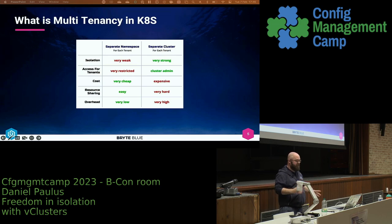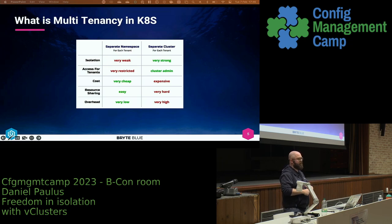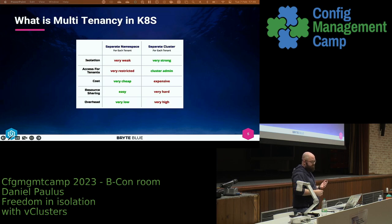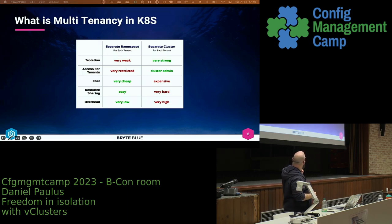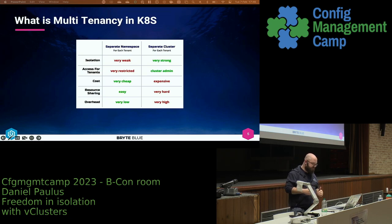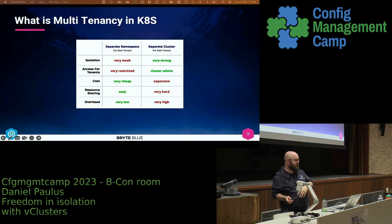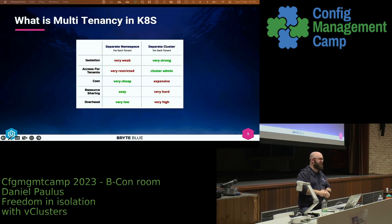If we zoom in on the issues we saw: isolation is one of the weak points. A namespace doesn't bring any isolation whatsoever, so when you look at separate namespaces it's really weak. If you look at a separate cluster, it's very strong because they have their own isolated resources. For access, you could use RBAC permissions to only give access to that single namespace, which makes it really restricted. If we give them a separate cluster, they could be cluster admin — and most teams want to be cluster admin because they want to do everything they can.